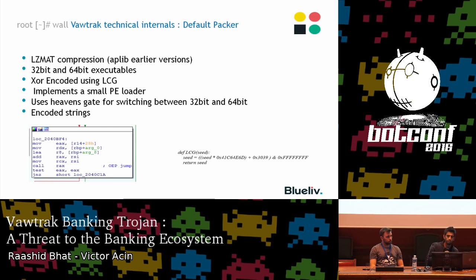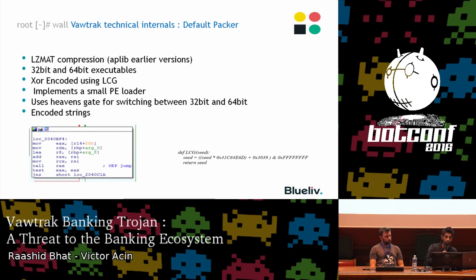Going back to the technical internals, Vawtrak comes with a default packer on top of other packers that criminals use to encrypt or pack it. The base buffer in the default packer is always LZMAT compressed; the earlier version used APLib. When the buffer is decompressed, it reveals two executables — 32-bit and 64-bit — and either one is executed depending on the system. Apart from compression, it also uses XOR encoding. After compression, XOR encoding is used to reveal the real executable, which is based on the LCG algorithm.